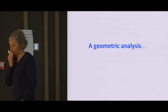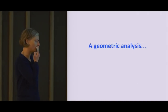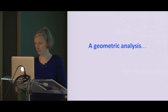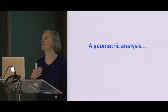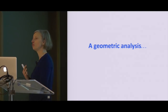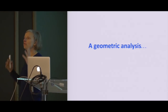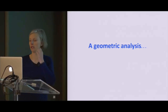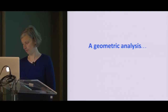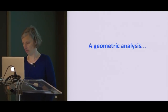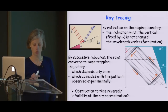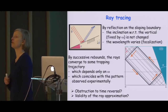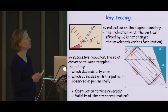An explanation was given some 10 to 15 years ago using what is called geometric analysis or ray tracing. Let me explain this first approach. The idea is: once you have fixed the frequency of oscillation, you know the direction of propagation — essentially you know the angle between the vertical and the direction of propagation.